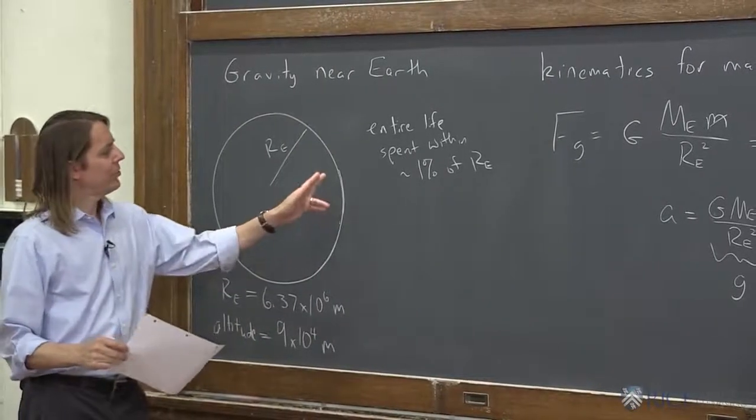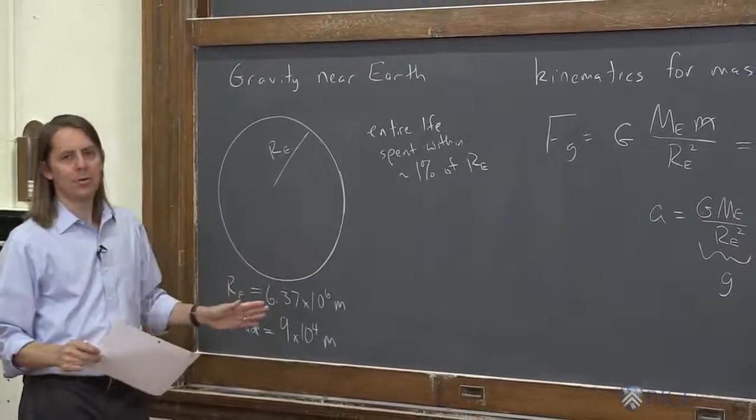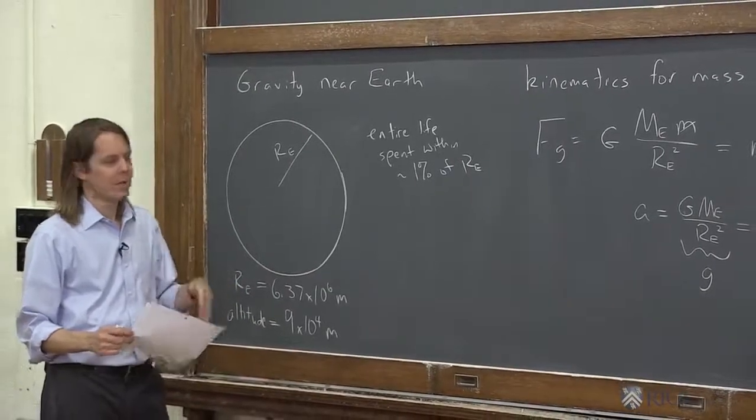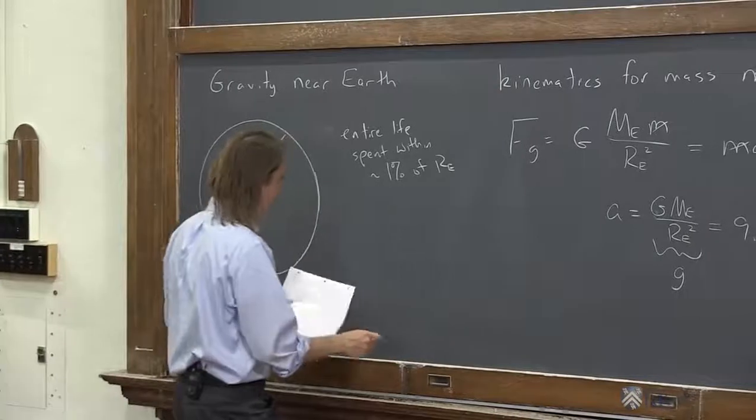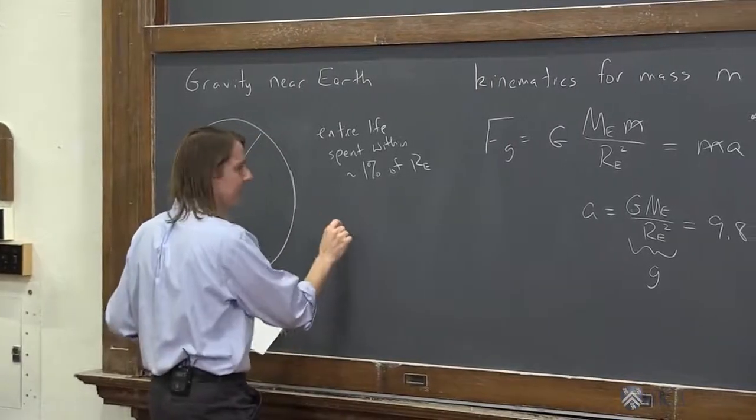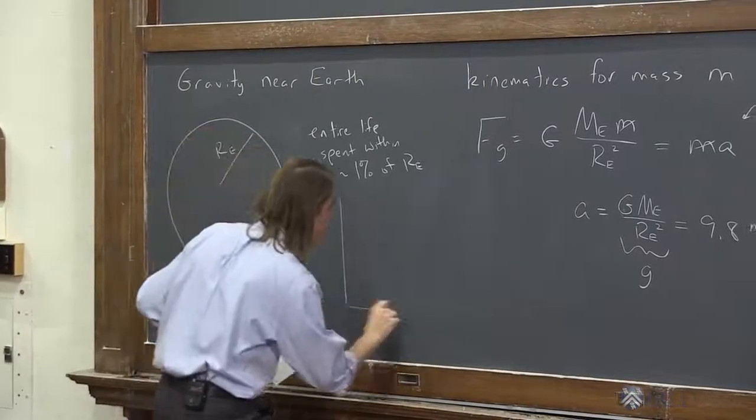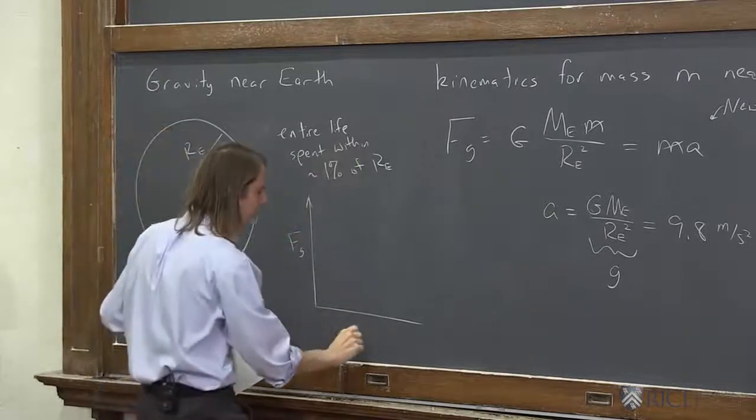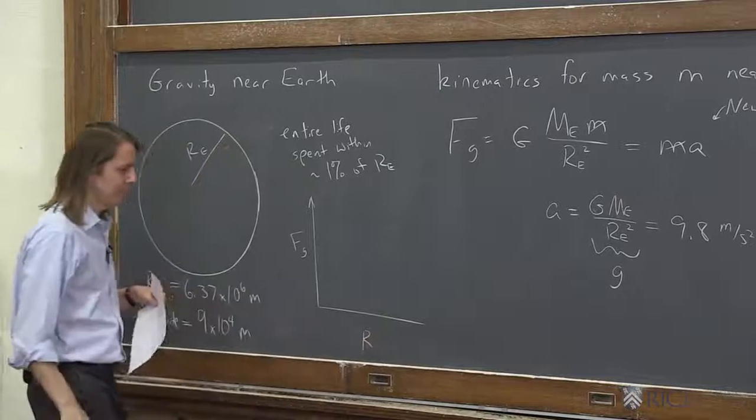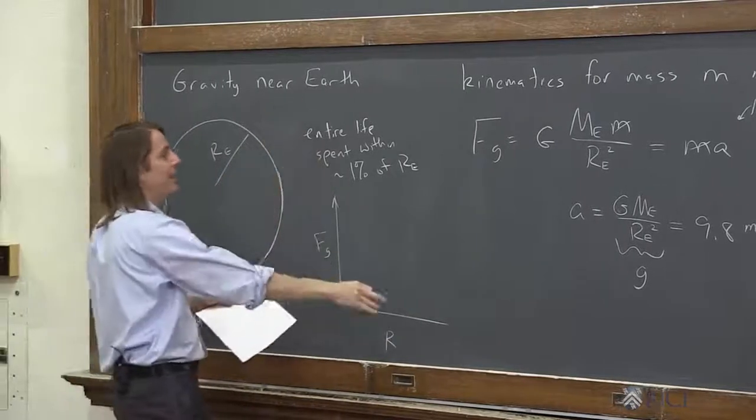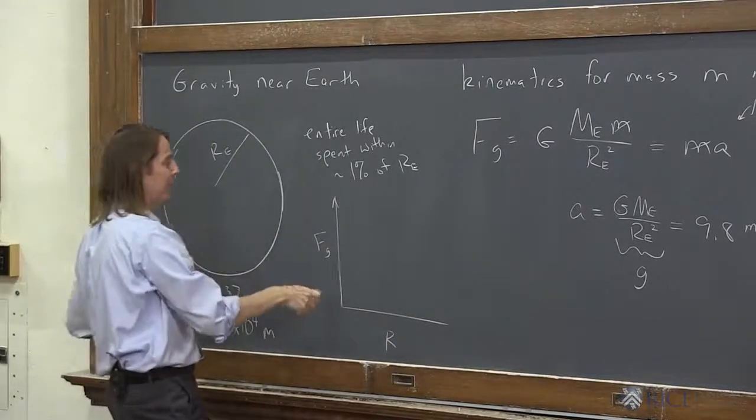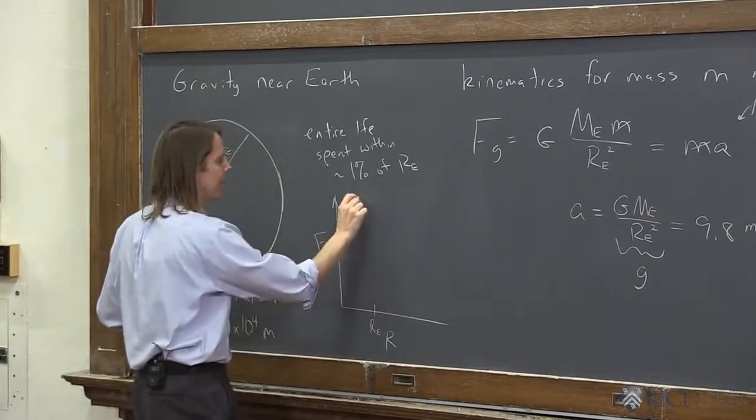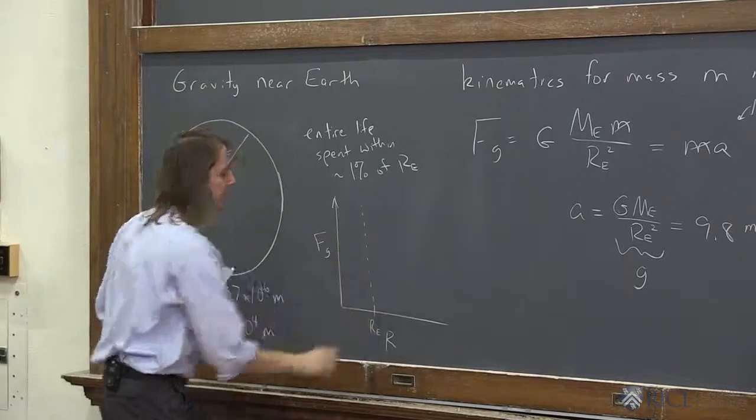So 1% is small, but it's not zero, right? You actually can sort of detect the change in G as you move up and down. And we can kind of look at it graphically here. If we look at the universal Fg as a function of radius, the force would go to infinity if the Earth were a point particle and you got right next to it. But really, it's only meaningful outside the surface of the Earth.